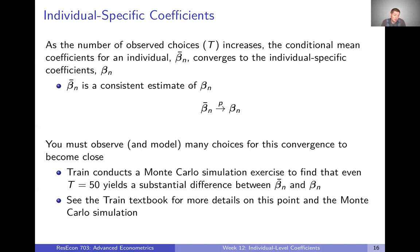One tricky thing is that you must observe many choices for this convergence to even become close. In the textbook, Ken Train conducts a Monte Carlo simulation exercise looking at one, five, ten, all the way up to 50 choices. Even at 50 choices, he finds a substantial difference between the simulated conditional mean coefficient and the actual true underlying individual-specific coefficients — which he knows because he's generating and simulating all the data. Take a look at the textbook for more details and the full set of results from this simulation.